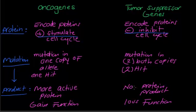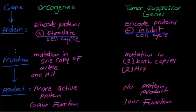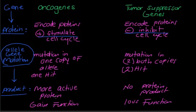Two terms to know: there is a gene responsible for forming a protein. If that gene or allele gets a mutation, the product — which is a protein product — can be either more active, which is gain of function, or there is no protein product, which is loss of function.